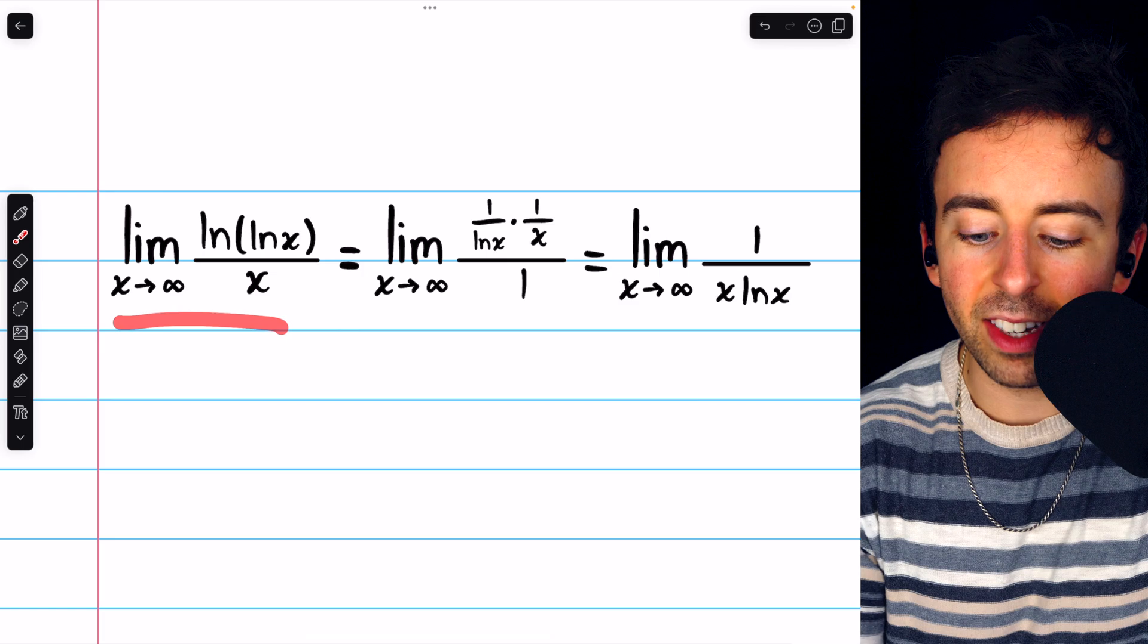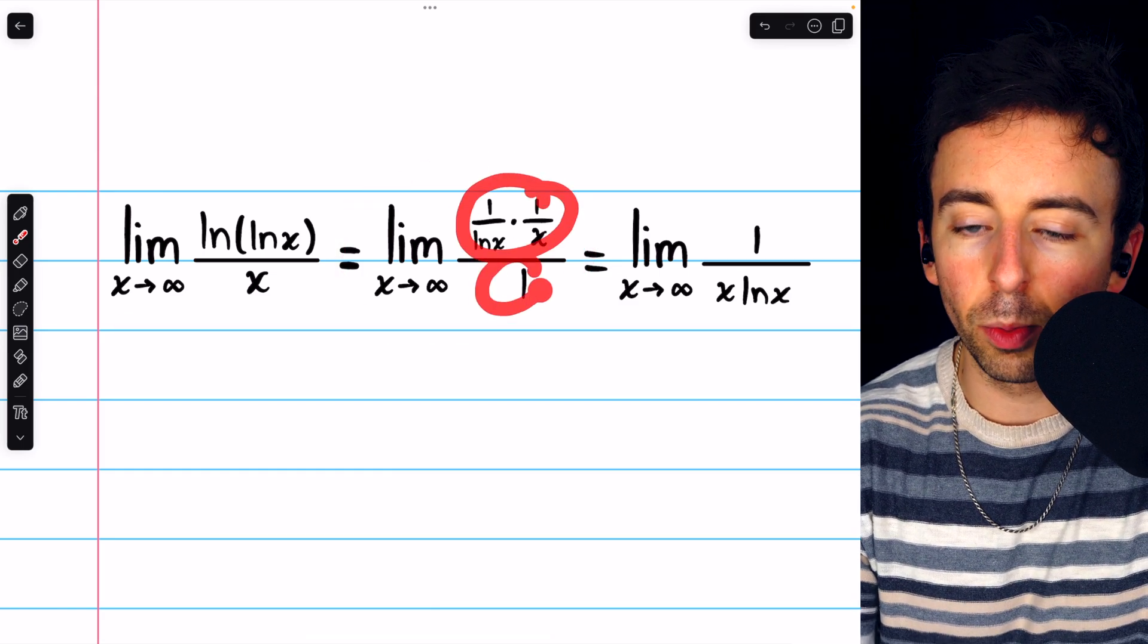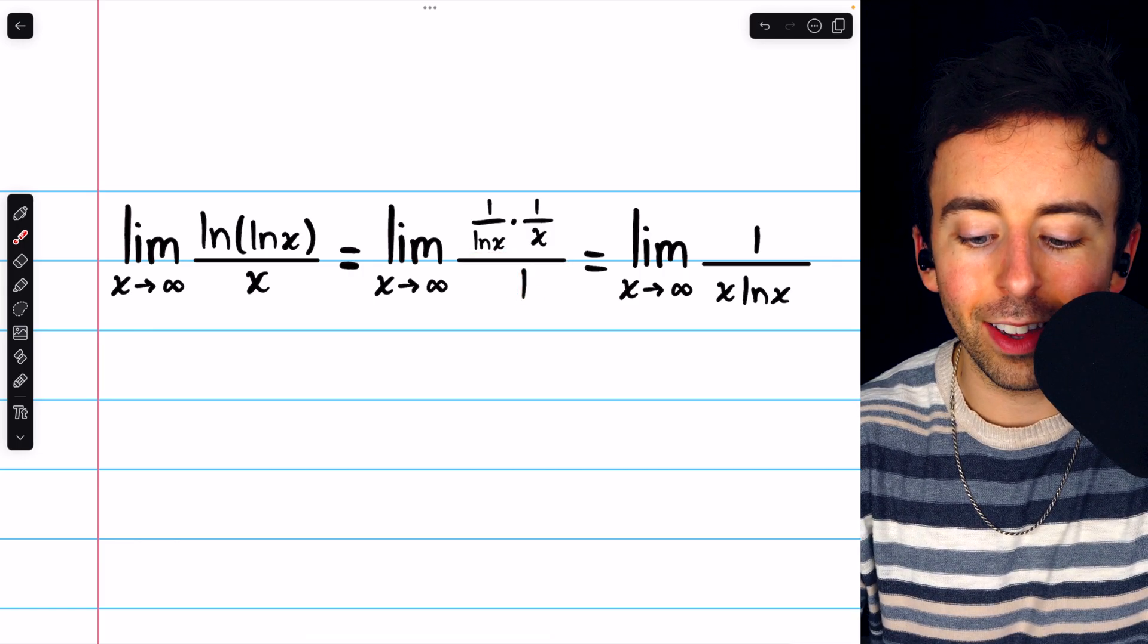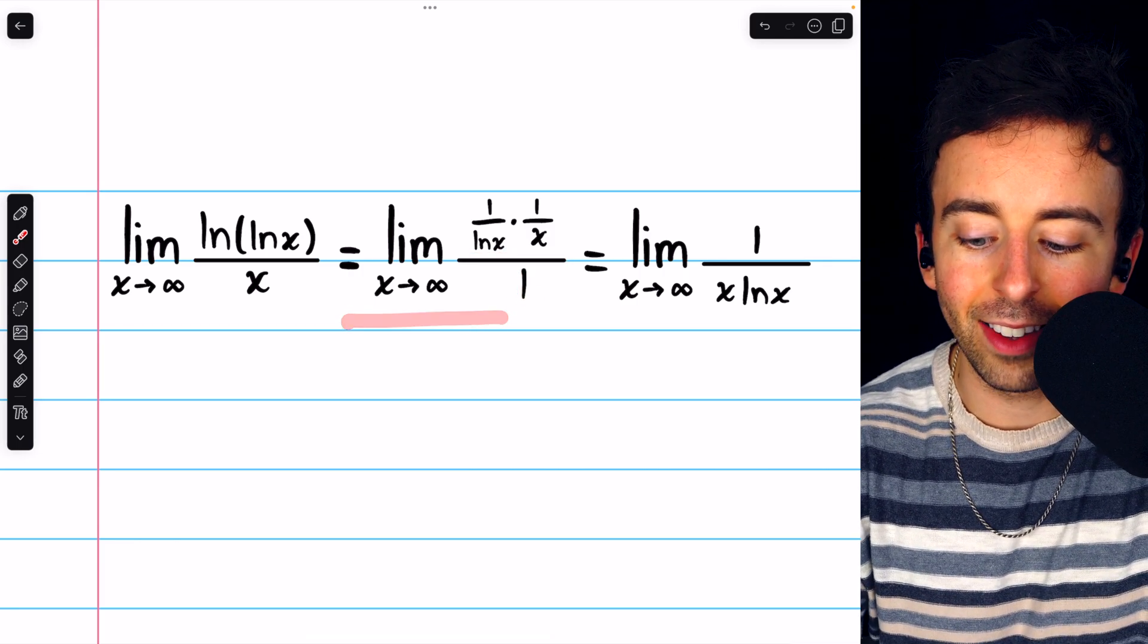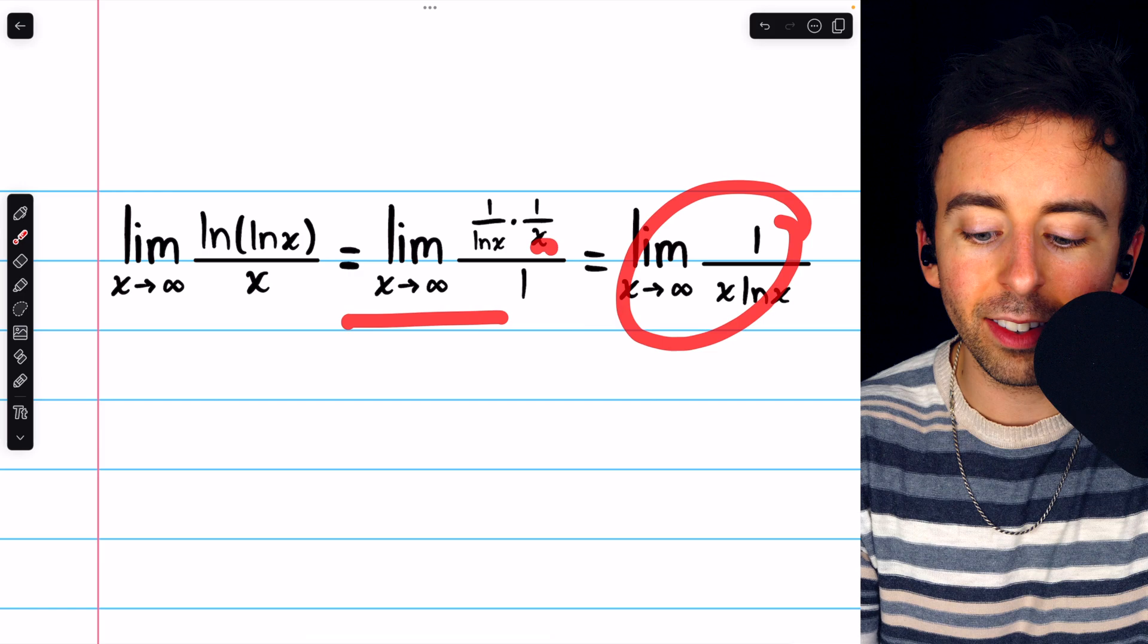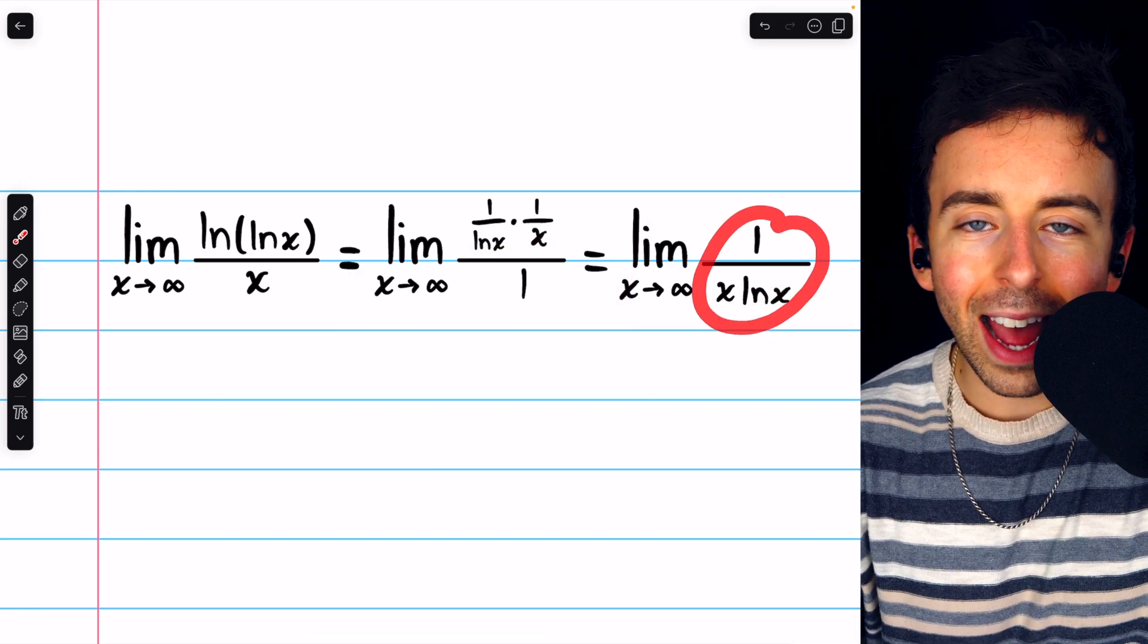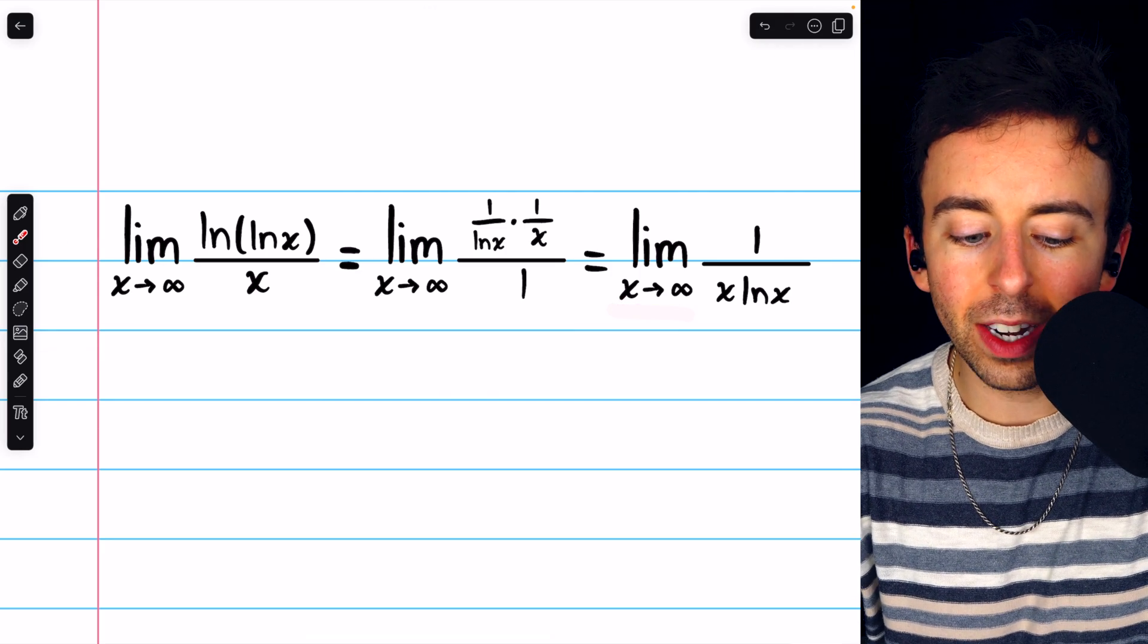So, this limit must equal this, where we have the derivatives of the numerator and denominator. Of course, dividing by 1 doesn't change anything, so we can just write this as this, where it's x times lnx in the denominator. And 1 over x lnx, as x goes to infinity,